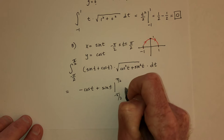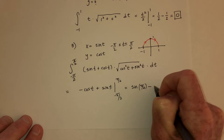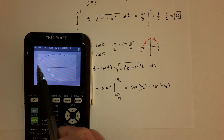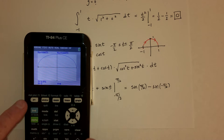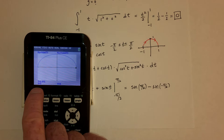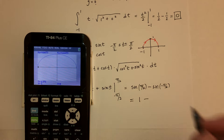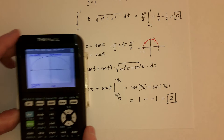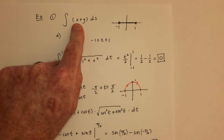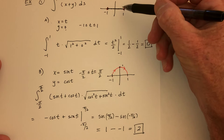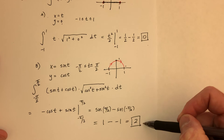cos(π/2) = 0 and cos(−π/2) = 0, so the cosine terms contribute nothing. Then sin(π/2) = 1 and sin(−π/2) = −1, giving 1 − (−1) = 2. So the answer is 2. This illustrates that depending on the function, taking a different path may give a different answer, or possibly the same answer — it depends on the function.